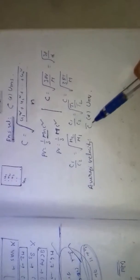The ratio of RMS velocities of two gases: C1 by C2 equals root of M2 by M1. For the same gas, the ratio of RMS velocities equals root of T1 by T2.